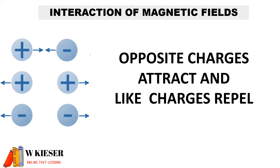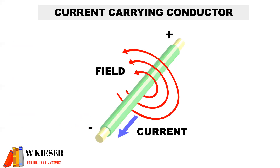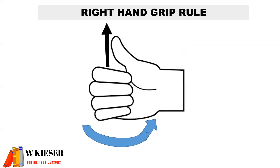For the interaction of magnetic fields, we find that opposite charges attract and like charges repel. For a current-carrying conductor, if conventional current flow is flowing towards us, it means the magnetic field will be in the anti-clockwise direction.